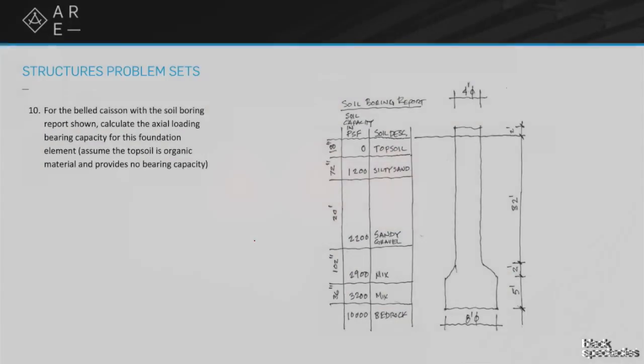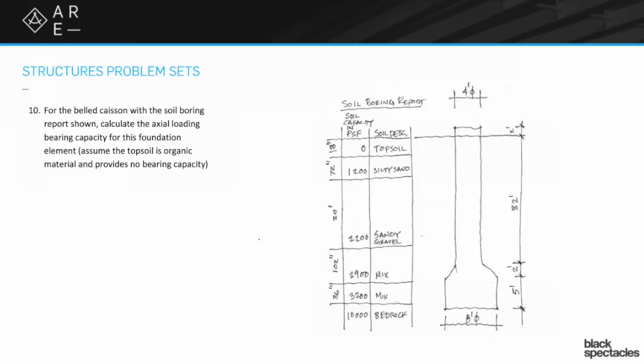This is for number 10. For the belled caisson with the soil boring report shown, calculate the axial loading bearing capacity for this foundation element. Assume the topsoil is organic material and provides no bearing capacity.